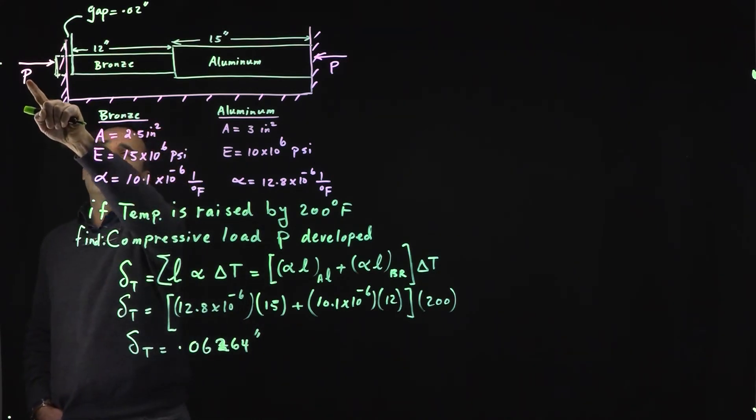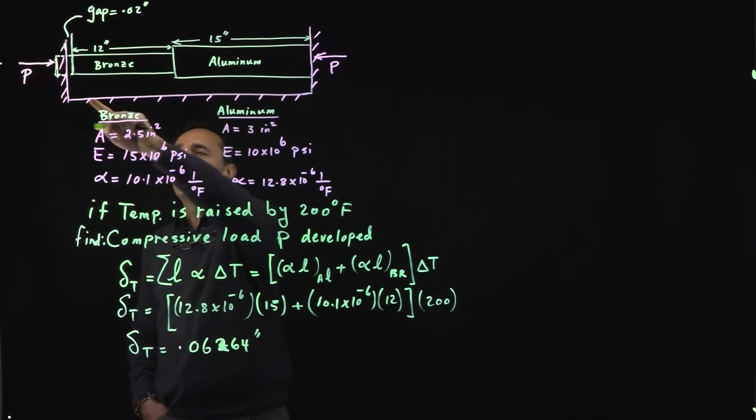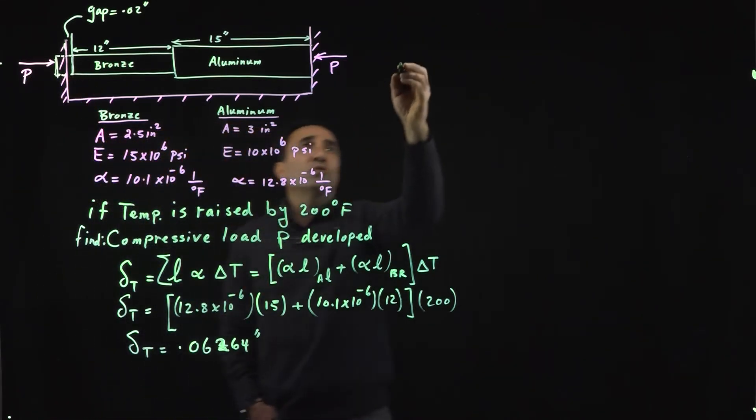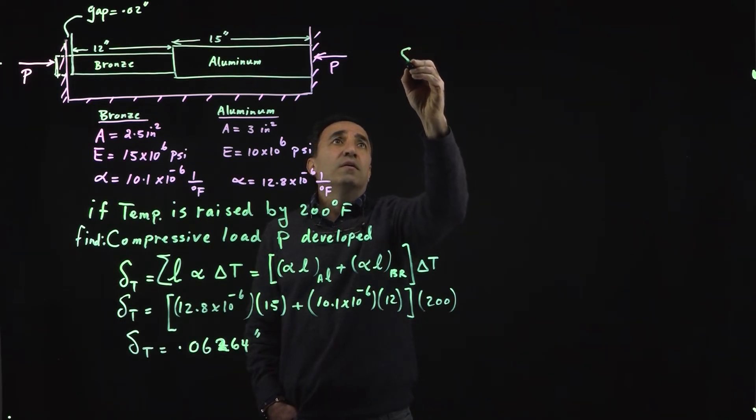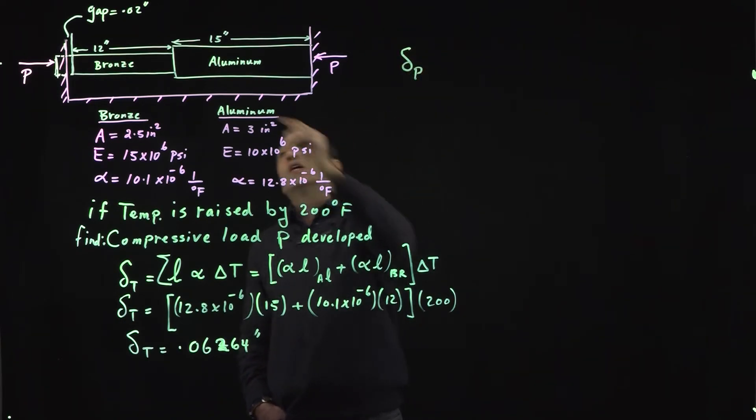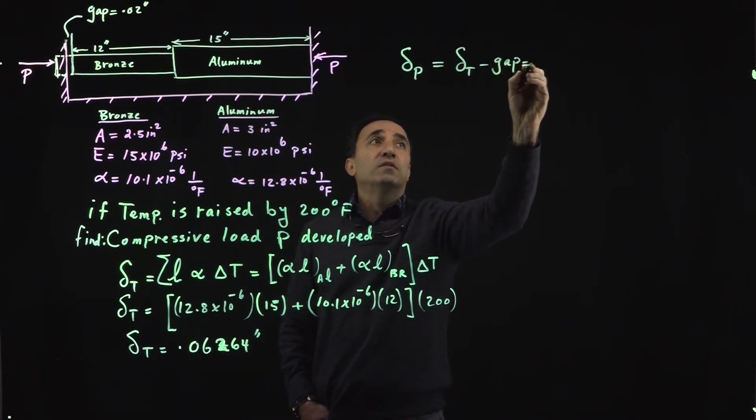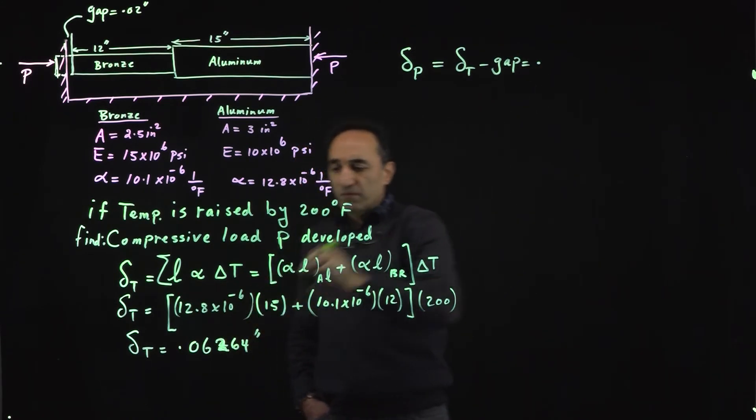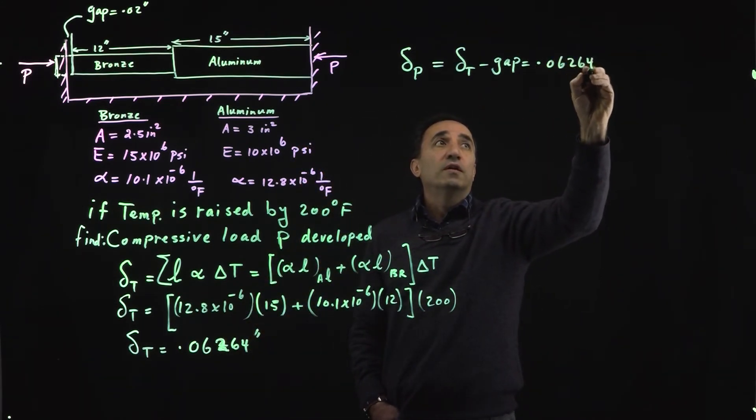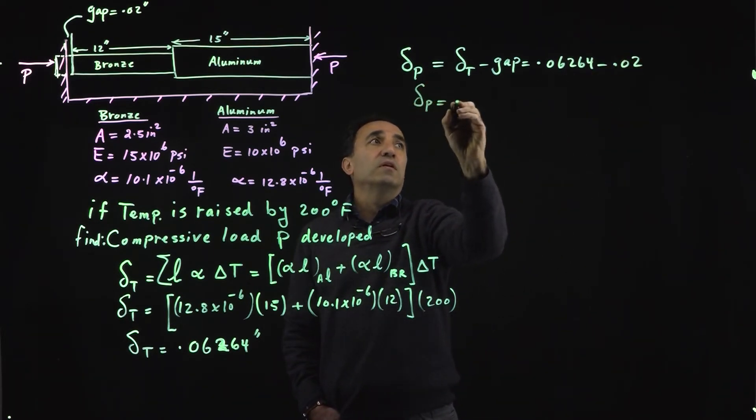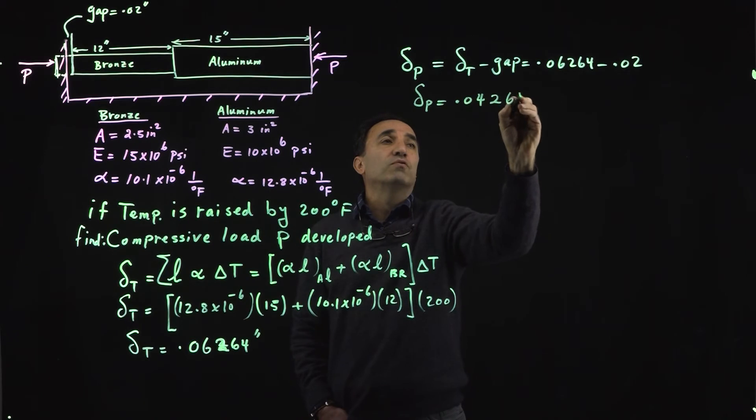Now imagine the compressive load that is developed is the load needed to bring this guy back to the wall. We can say the delta P, the one that is going to generate that compressive load, is the difference between delta T and the gap. If I deduct from the 0.0624 the 0.02 inches, then my delta P would be 0.04264 inches.